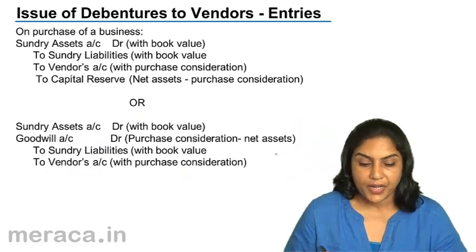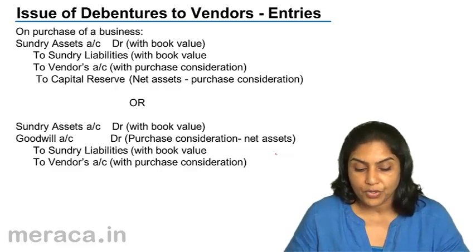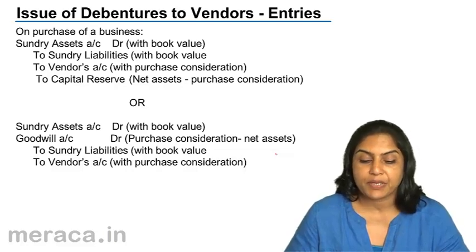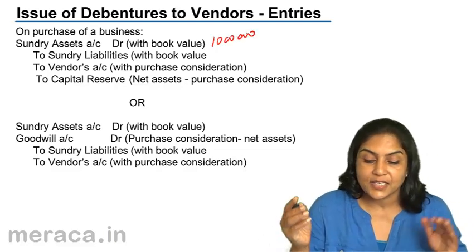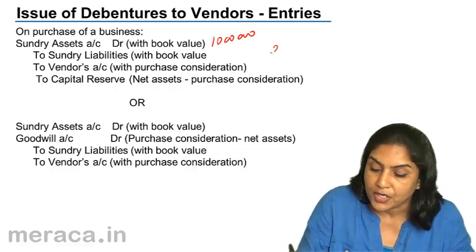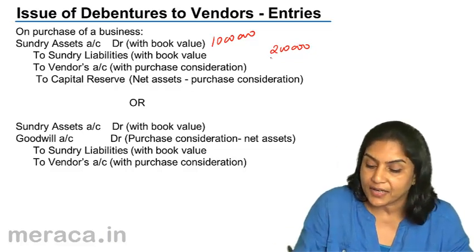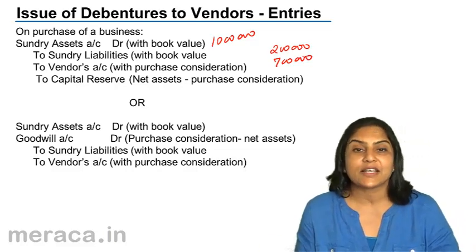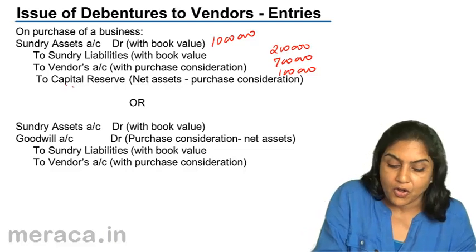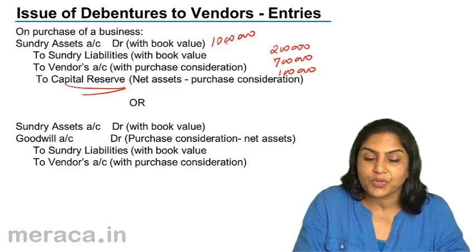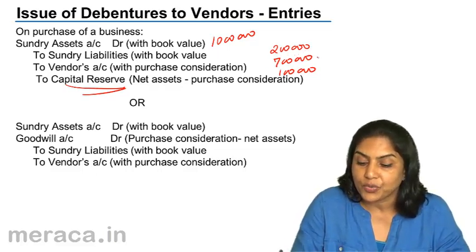Let us take a look at the accounting entries. On purchase of the assets: Sundry Assets account debit with book value, to Sundry Liabilities with book value, to Vendor account with the purchase consideration, to Capital Reserve. For example, suppose we take a business with sundry assets of 10 lakhs and liabilities of 2 lakhs — so net assets worth 8 lakhs. But the purchase consideration decided is only 7 lakhs. So we are paying 7 lakhs for net assets worth 8 lakhs; the remaining 1 lakh would be profit or capital reserve.